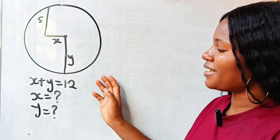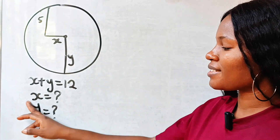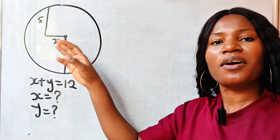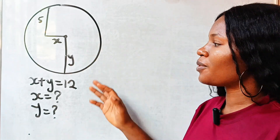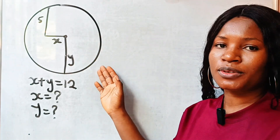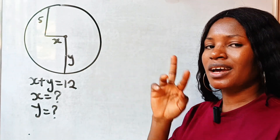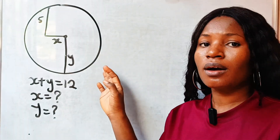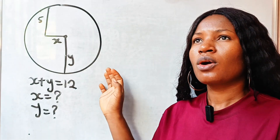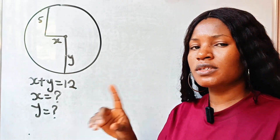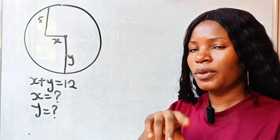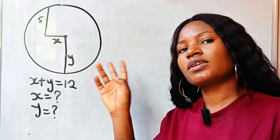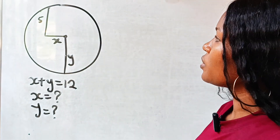Hi, let's find the value of x and y in this particular diagram. Welcome back to my channel. This is not drawn to scale, and this is the second and third method of solving this particular problem. We've already solved the first method before, so this is the second and third method.